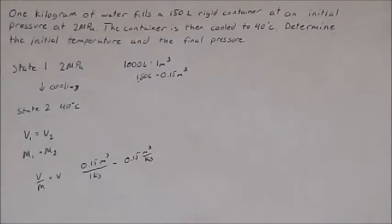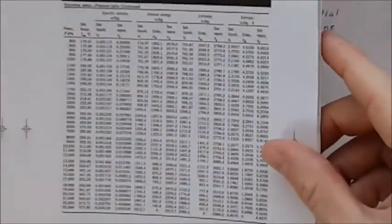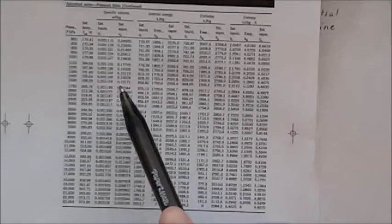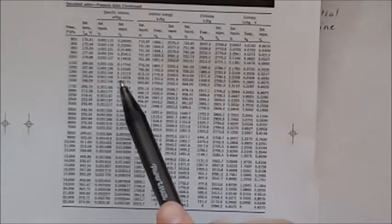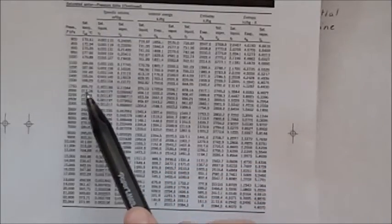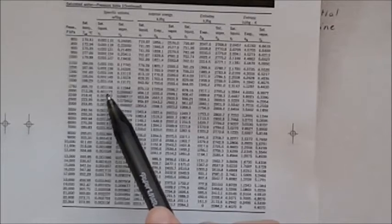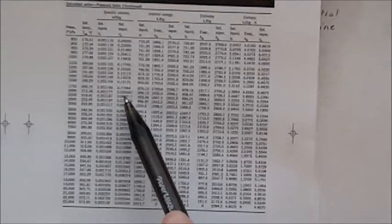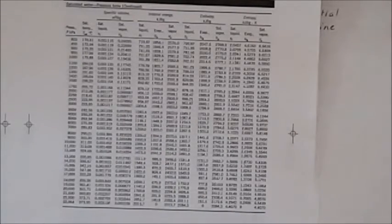So let's start with state one. We know at state one we have two megapascals. So if we go in the back of a book or online we can find two megapascals and now we also know the specific volume so we can look in these two columns at the specific volume and then at two megapascals. So we have a specific volume range of 0.001177 to 0.099587. Our specific volume is 0.15 and it does not fall into this range. Meaning that water at this state is not saturated.